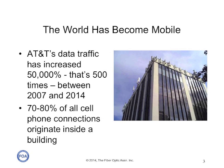Over the last seven years, AT&T's data traffic on their cellular systems has increased 50,000% — that's 500 times since the introduction of the iPhone in 2007. But 70 to 80% of all cell phone connections originate inside a building.